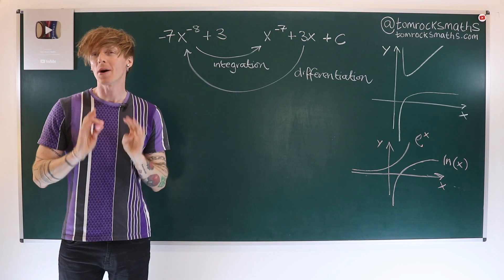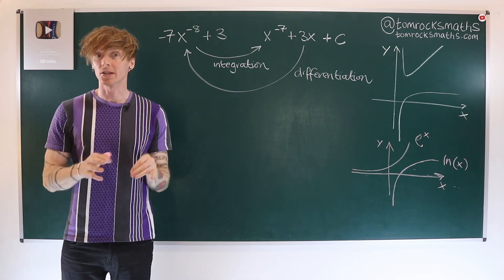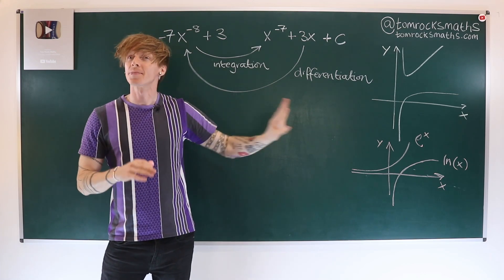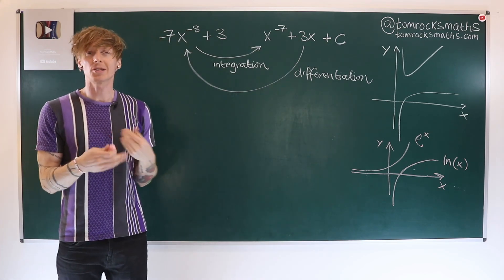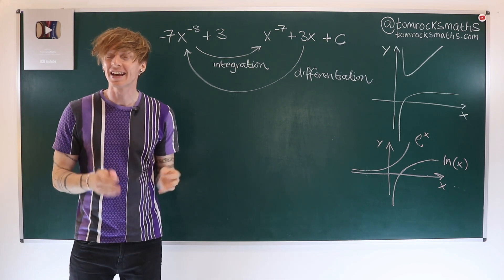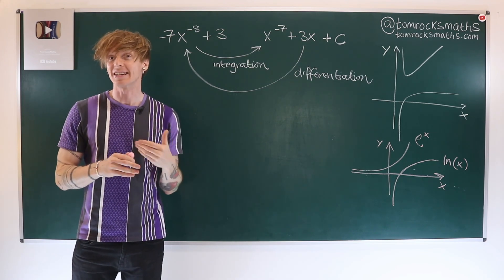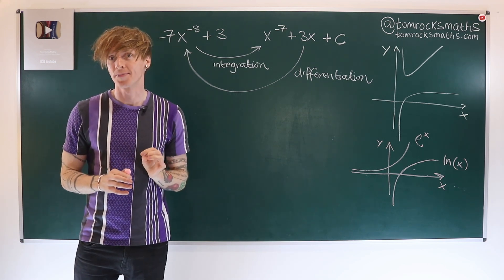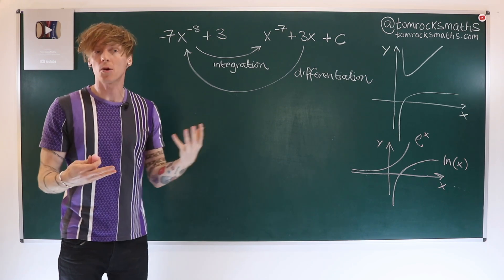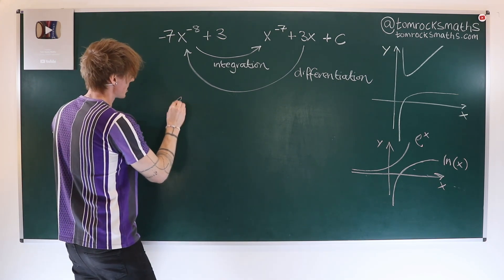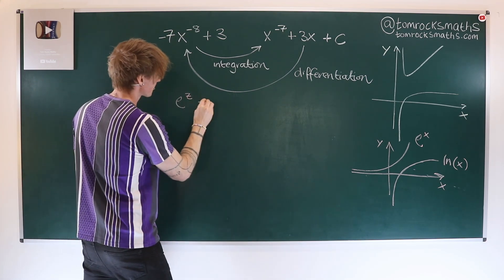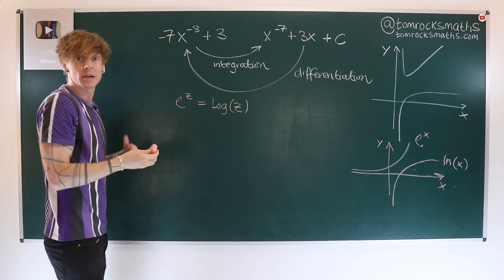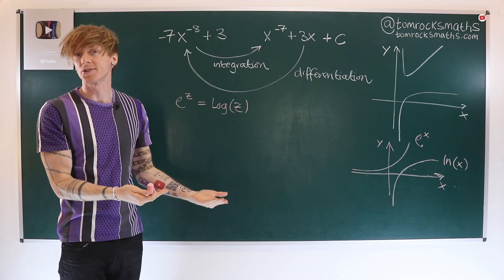However, whilst this is true for real valued solutions — the graphs do not intersect as shown on the plot — if we allow our solutions to be complex, then there are in fact intersection points, and you can see this by doing a little bit of algebra. So if we wanted to solve the equation, it would be e to the power of z is equal to the natural log of a complex number z, and we are looking for complex valued solutions z.